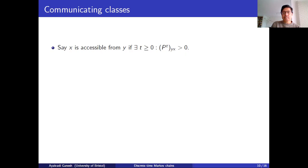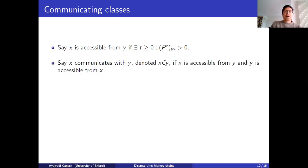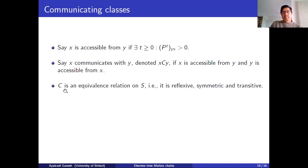So x is accessible from y if we can get from y to x at some time. We say that x communicates with y if both things are true: we can get from y to x and we can get from x to y. We write x~y to denote this. This defines a relation on the state space S — a subset of the Cartesian product of S with itself — saying two states are related by this communications relation if they communicate with each other.